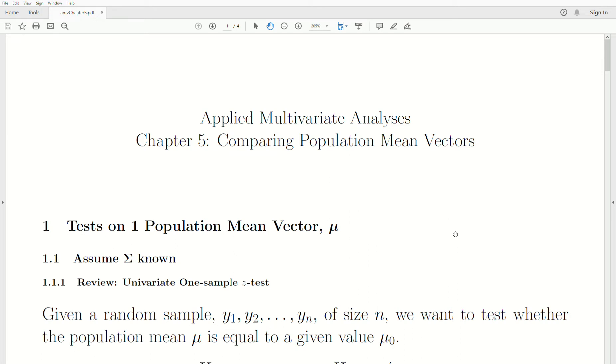Hello, this is the next video in a playlist that I'm calling Applied Multivariate Analysis. We're going to start what I'm going to call Chapter 5 part of this playlist, which is comparing population mean vectors.